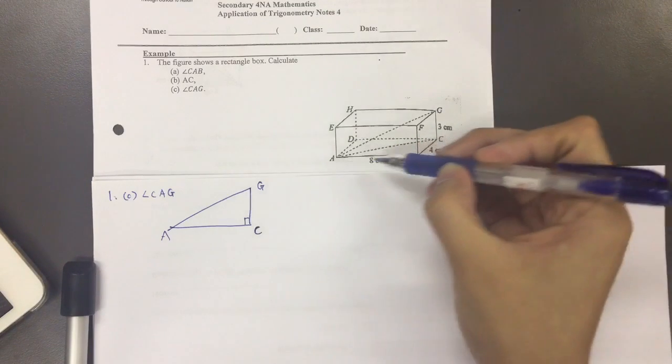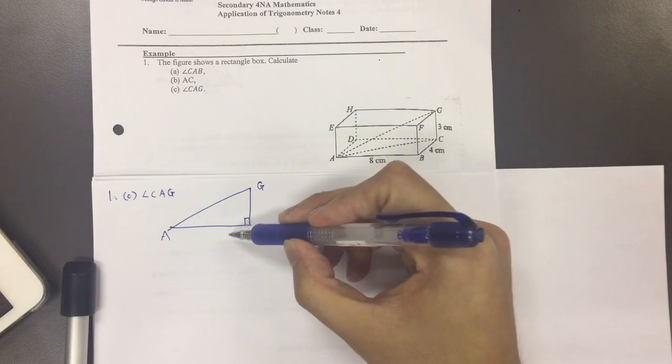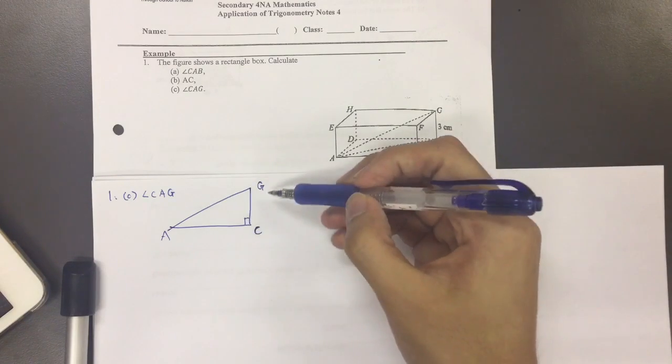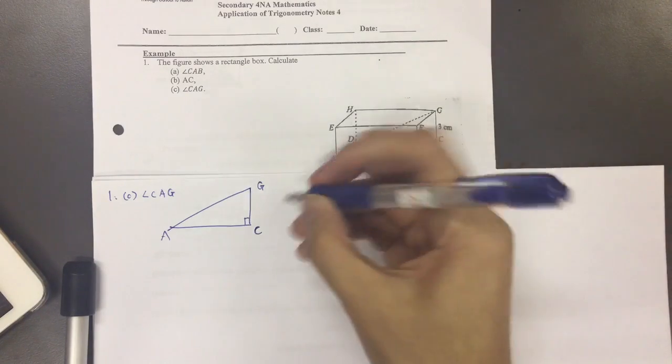So with that, let's continue to fill in the sides or lengths that we know on this triangle. GC is the length of 3, so 3 here.